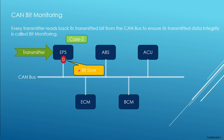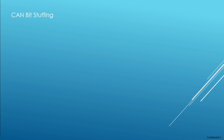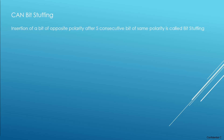Let us now see about what is CAN bit stuffing. As the name suggests, it is the stuffing of bits. The definition is: insertion of a bit of opposite polarity after five consecutive bits of the same polarity is called bit stuffing.